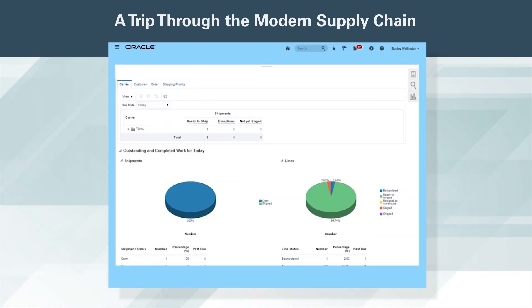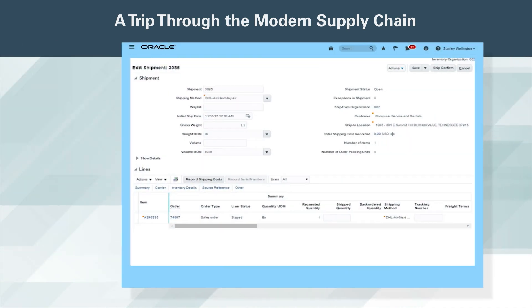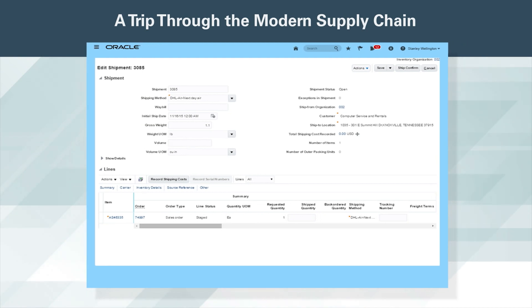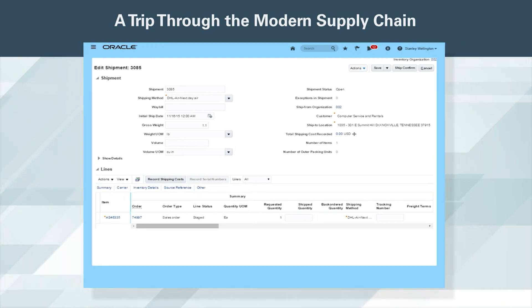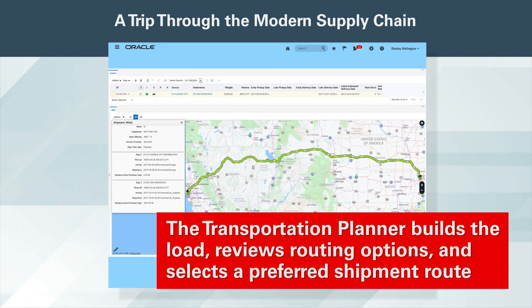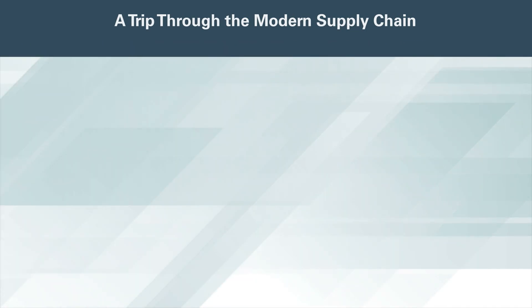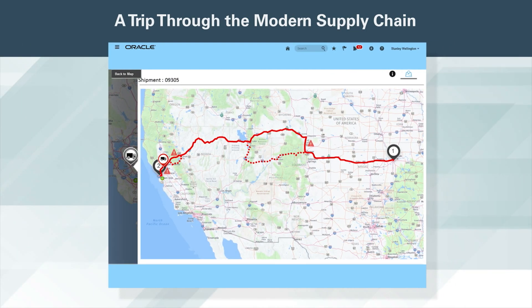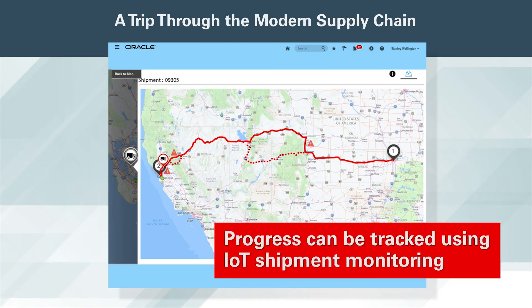The order is staged and ready to ship, so the warehouse operator simply clicks the shipment. The operator verifies the item and confirms the shipment in a single click. The transportation planner builds the load, reviews routing options and selects a preferred shipment route. Because it is a critical shipment, the progress can be tracked using IoT shipment monitoring.